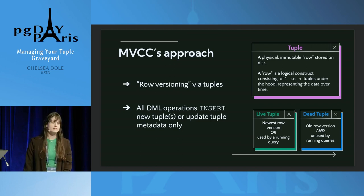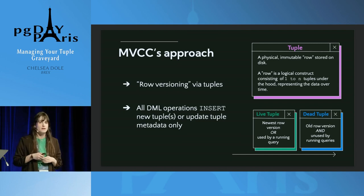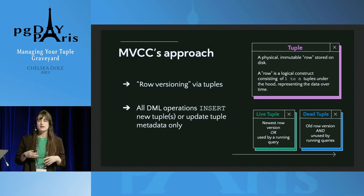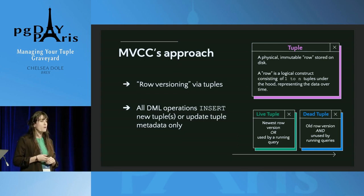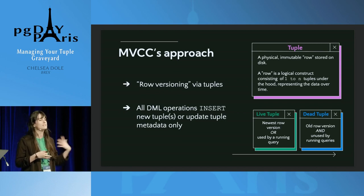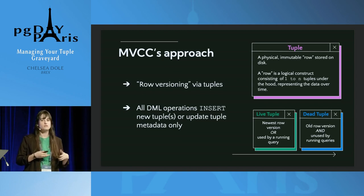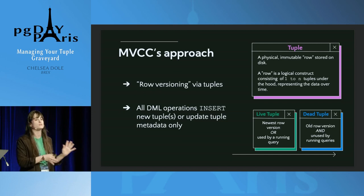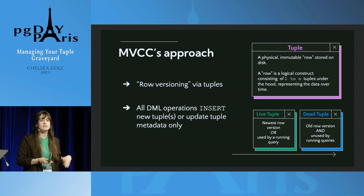The approach MVCC takes is row versioning via tuples, focusing on the multi-version part of that acronym. A tuple is a mathematical idea for an ordered set of values, but in Postgres itself we refer to it as the physical or immutable row stored on disk. A row is the logical construct consisting of one to n tuples under the hood — a row is what is returned to you when you run select, and a tuple is how that row is stored underneath. A live tuple is the newest row version for some data, or an older row version that's still useful to some running query.